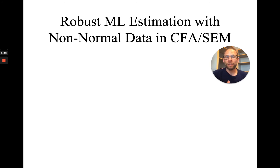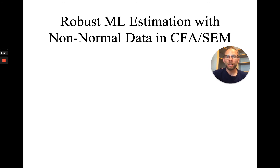So then, what can you do? How can you be on the safe side when you have non-normal data? What are options to use other than conventional maximum likelihood estimation, which might show these types of problems? I want to discuss some of those options here and show you how you can set them up in Mplus when you're estimating these types of models.